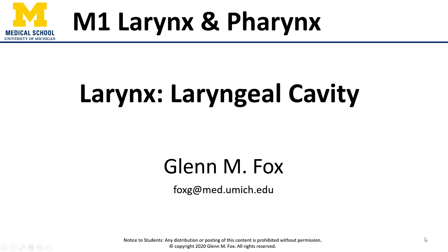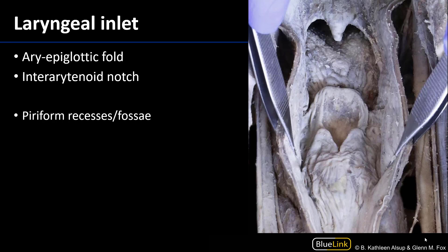Let's talk about the laryngeal cavity. The story of the laryngeal cavity really begins at the laryngeal inlet, and that is the space through which air may move between the laryngopharynx to the outside and the laryngeal vestibule, which is within the larynx.